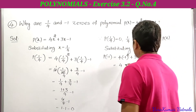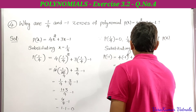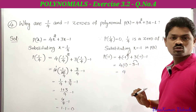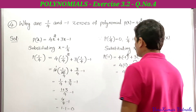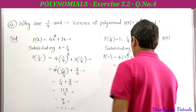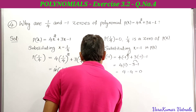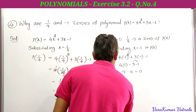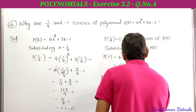4 × (-1)² = 4 × 1 = 4. And 3 × (-1) = -3. So p(-1) = 4 - 3 - 1 = 4 - 4 = 0. Since p(-1) = 0, -1 is a zero of p(x).